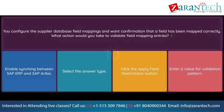Question. You configure the supplier database field mappings and want confirmation that a field has been mapped correctly. What action would you take to validate field mapping entries? Option 1: Enable syncing between SAP ERP and SAP Ariba. Option 2: Select the answer type. Option 3: Click the apply field restrictions button. Option 4: Enter a value for validation pattern.